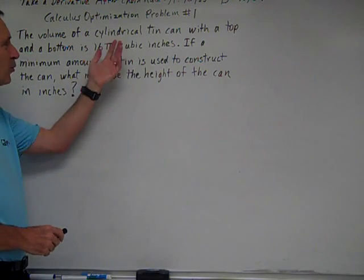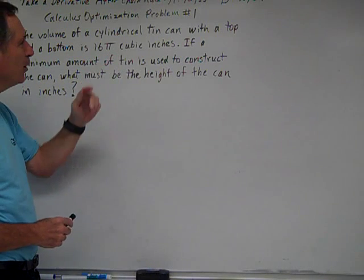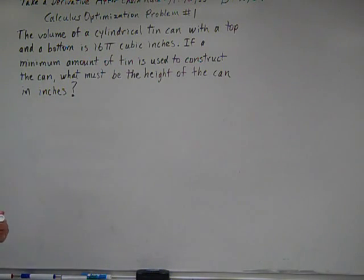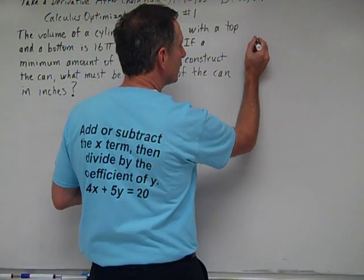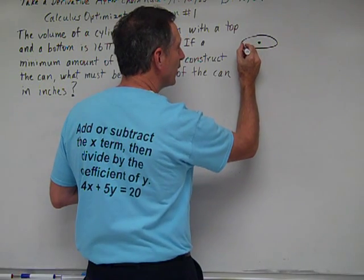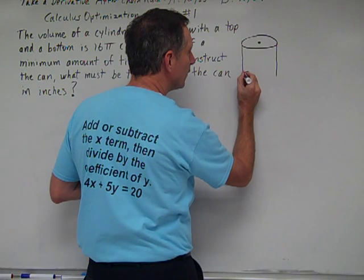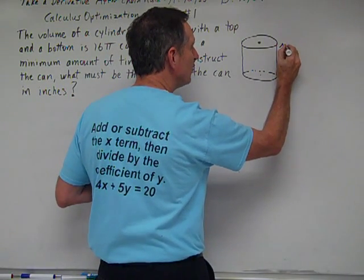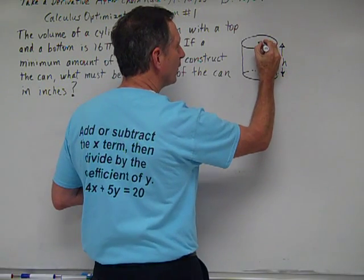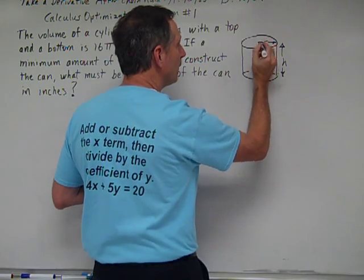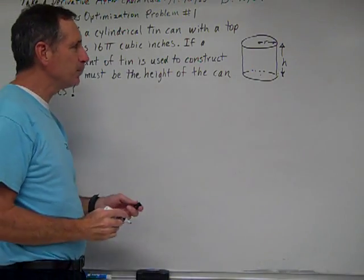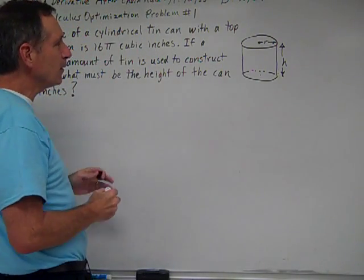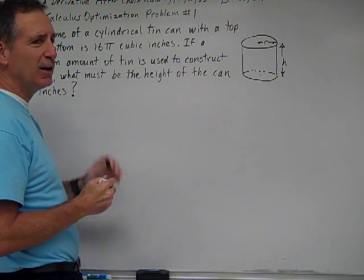Calculus optimization problem number one. The volume of a cylindrical tin can with the top and the bottom is 16π cubic inches. If a minimum amount of tin is used to construct the can, what must be the height of the can in inches? As I like to do for problems like this, I'll make a little sketch. Here we have the top of the can and the bottom, with height h and radius r.